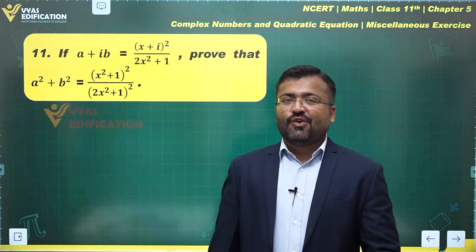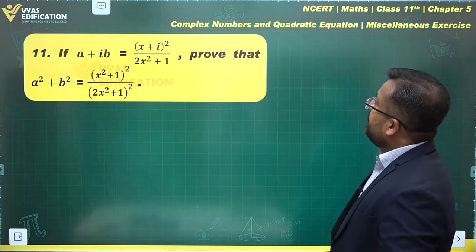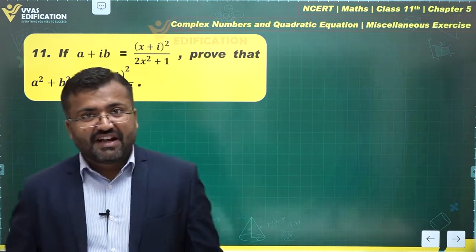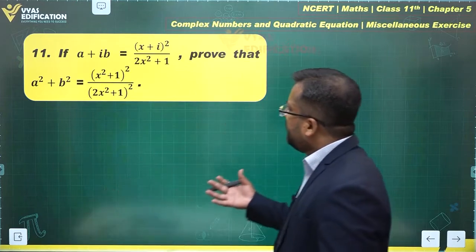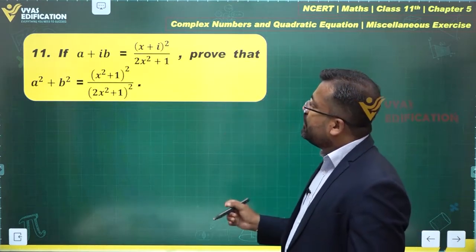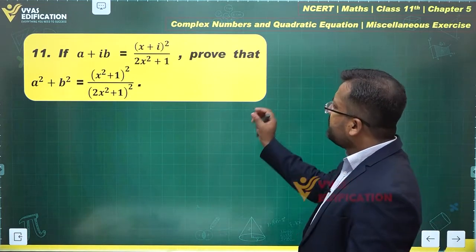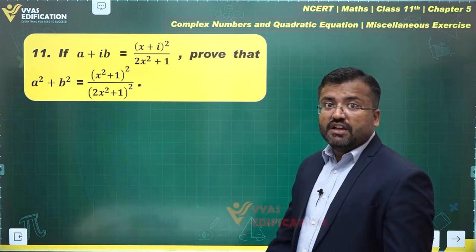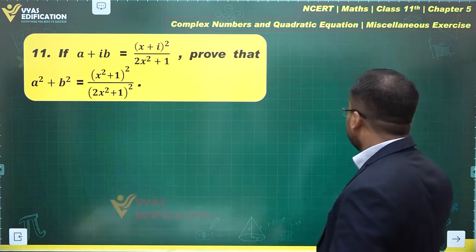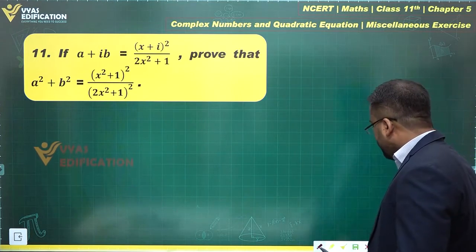Let's take a look at this question. Based on complex numbers and quadratic equations, miscellaneous exercise, this is question number 11. The question states that a plus ib is given to be equal to x plus i whole square over 2x square plus 1, and you are supposed to prove something. We have seen similar questions like this before.